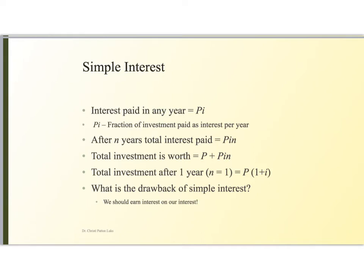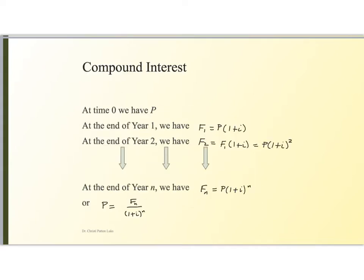Now, the reason people don't really use simple interest other than in friendly family loans, something like that, is that the interest that you still owe somebody ought to be earning interest also. So therefore, people developed compound interest.